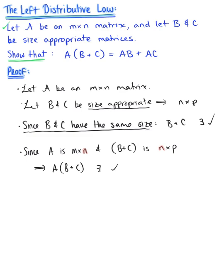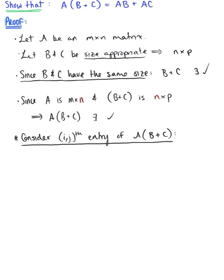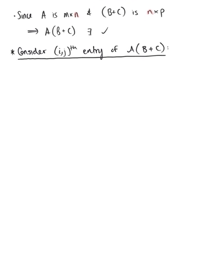Now, what I want to do is think about the i-th j-th entry of this new matrix. After we consider the vector operation, we'll go ahead and use summation notation to verify this alternatively. So we want to consider the i-th j-th entry of matrix A times the sum of matrix B plus matrix C. We want to multiply the i-th row of matrix A by the j-th column of the sum of matrix B and C.